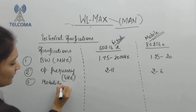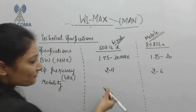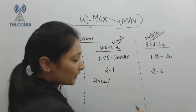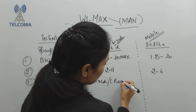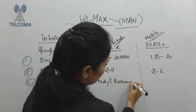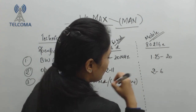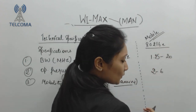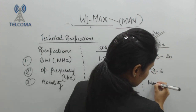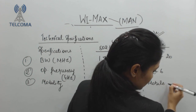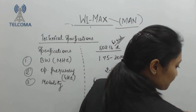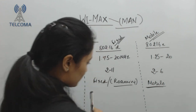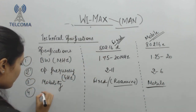For mobility, IEEE 802.16d is fixed but can support roaming, while IEEE 802.16e is mobile but with moderate mobility rate for mobile stations.